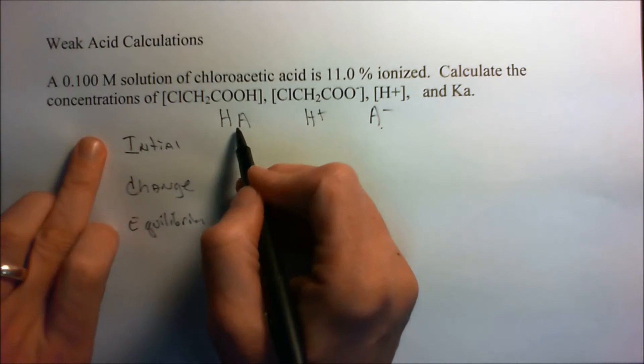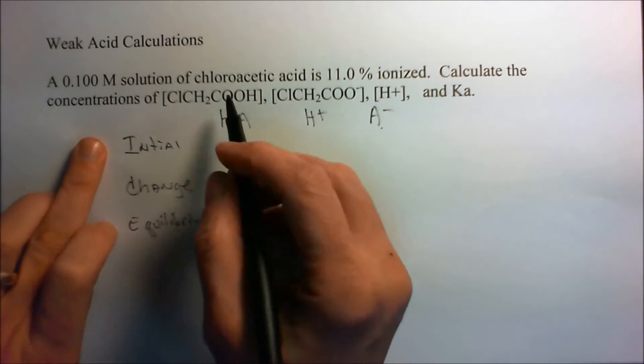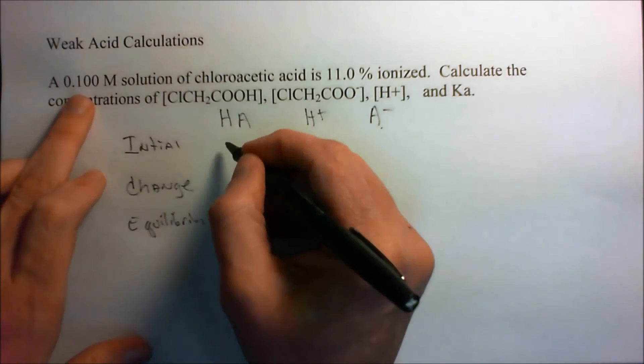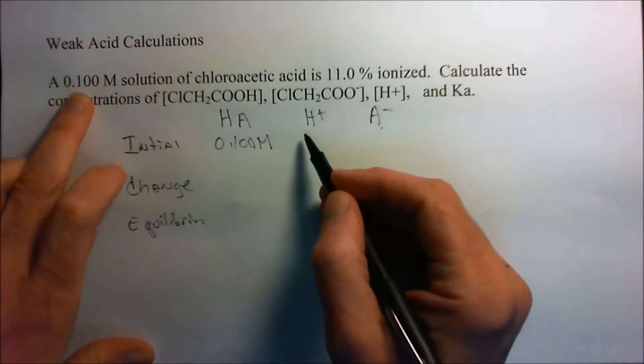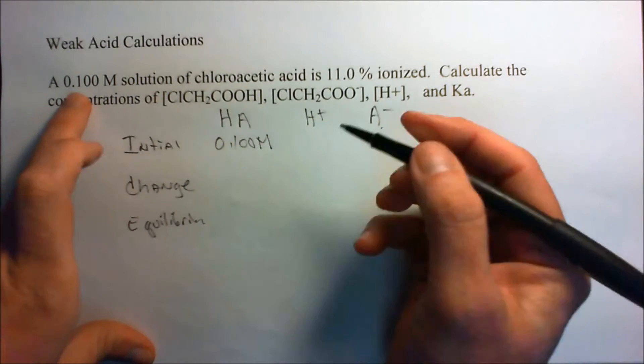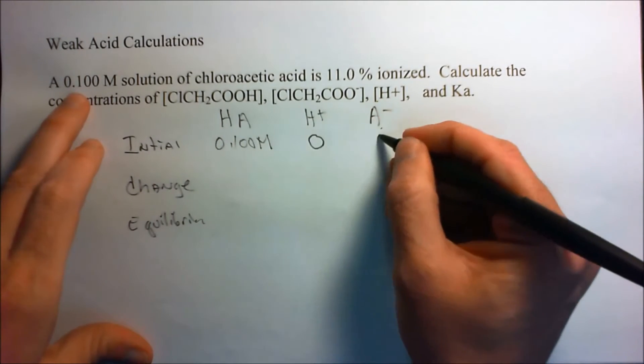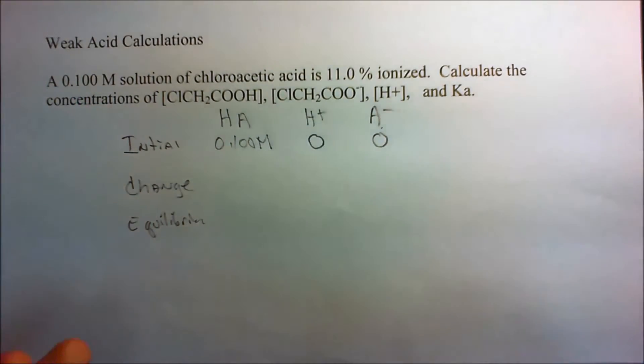And so the initial concentration of the undissociated acid is 0.1 molar, and the initial concentration of the acid would be zero for each one because that's what we added before when we topped it up. That's before anything ionized.